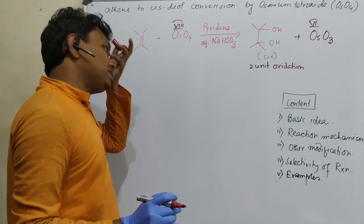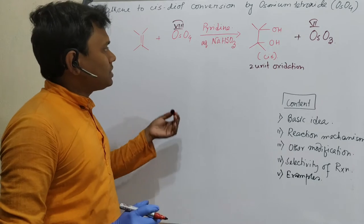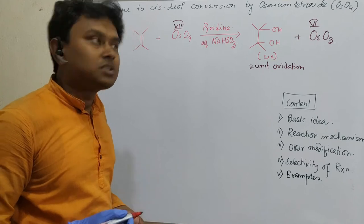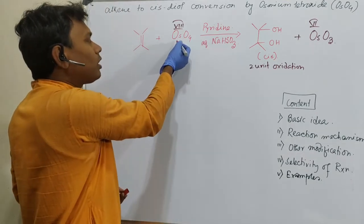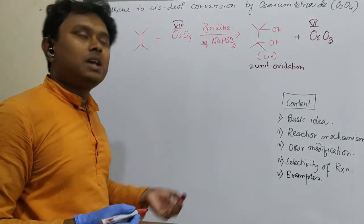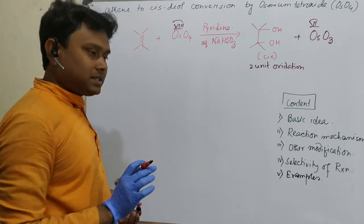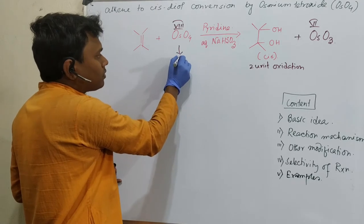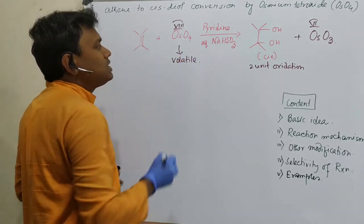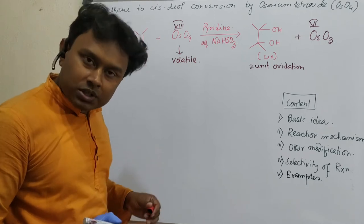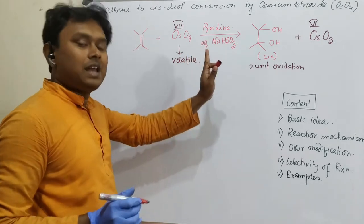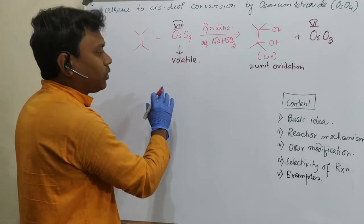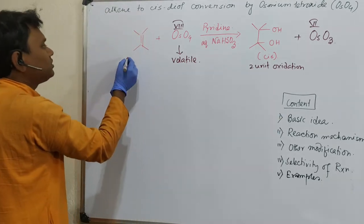So this is actually a redox reaction. Some oxidized and some reduced, and for this process what happens? Pyridine acts as a catalyst. How? Pyridine can coordinate the osmium center and facilitates the process. Second, there is some problem. This is volatile. So that problem is handled using pyridine. I'll explain other modifications also. Let's discuss the mechanism, then things will be clear.